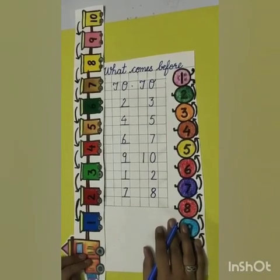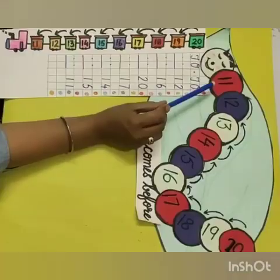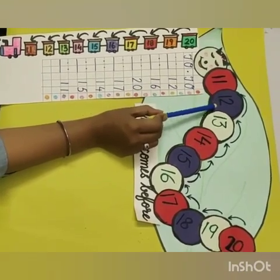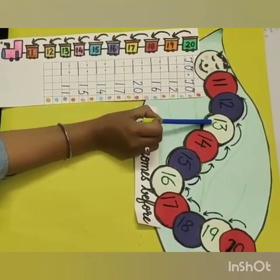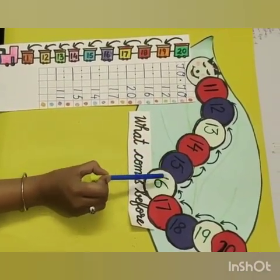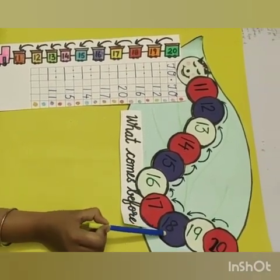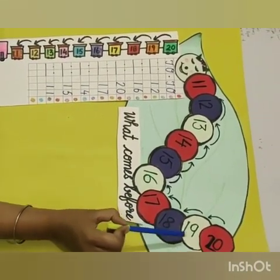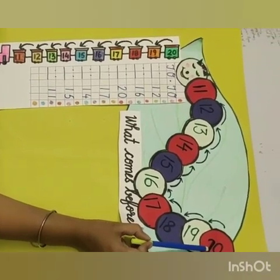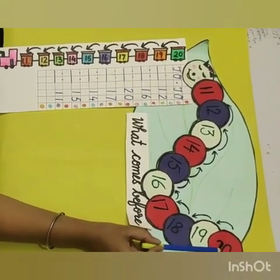Now let's move to the next line. Speak with me: 11, 12, 13, 14, 15, 16, 17, 18, 19, 20. Now we will count it backward.